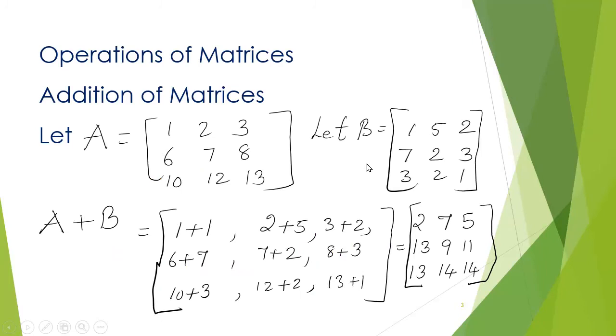Addition of matrices. Here, two matrices are given. Let matrix A be 1, 2, 3, 6, 7, 8, 10, 12, 13. And let matrix B be 1, 5, 2, 7, 2, 3, 3, 2, 1.